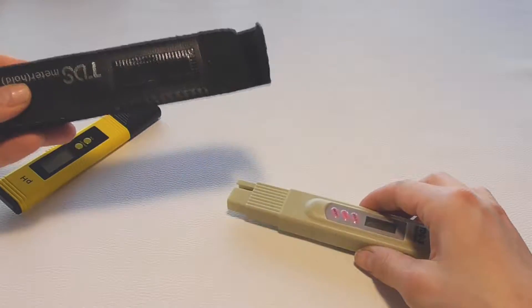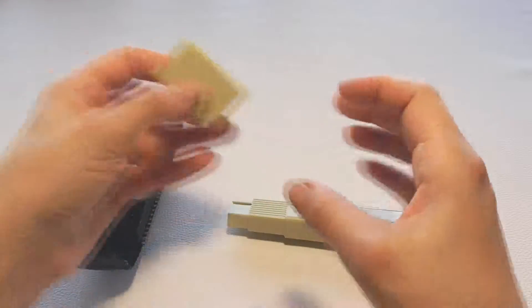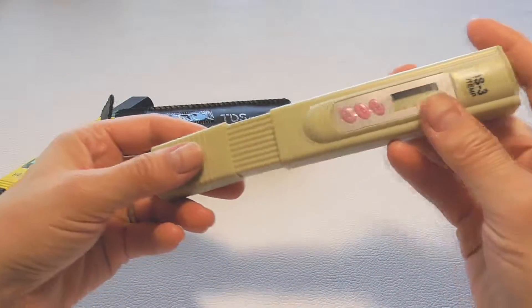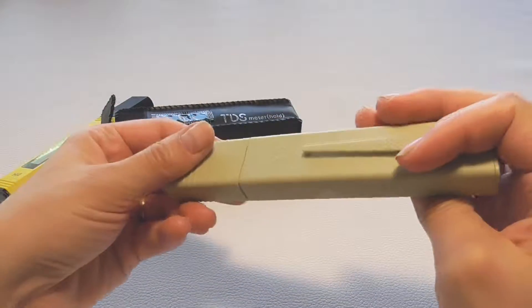So what is pH and TDS and why do you need to test them? A TDS meter indicates the total dissolved solids, the concentration of dissolved solid particles such as salts and minerals.